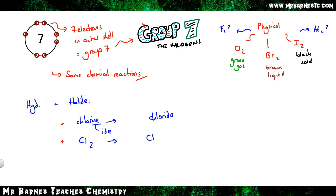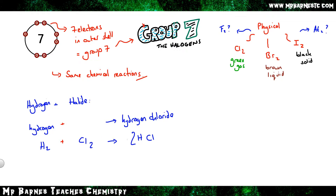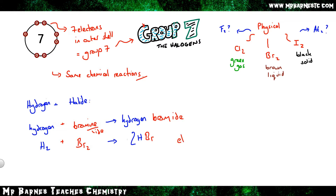It's also the same if you have hydrogen instead of a metal. Hydrogen plus chlorine makes hydrogen chloride (HCl), balanced as H₂ + Cl₂ → 2HCl. It doesn't matter which halide you use: hydrogen plus bromine (Br₂) makes hydrogen bromide, and so on.